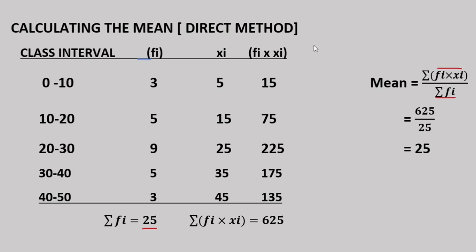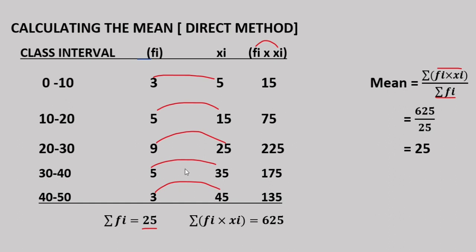Now we compute fi into xi. The fi·xi values are: 3 into 5 is 15; 5 into 15 is 75; 9 into 25 is 225; 5 into 35 is 175; 3 into 45 is 135. So fi·xi gives: 15, 75, 225, 175, 135.